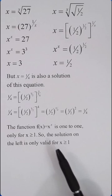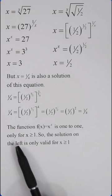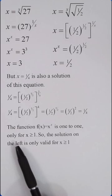What is happening here is that the function f of x equals x to the x is one to one only for x greater than or equal than one. So this type of solution on the left is only valid for x greater than or equal than one, not for one-half.